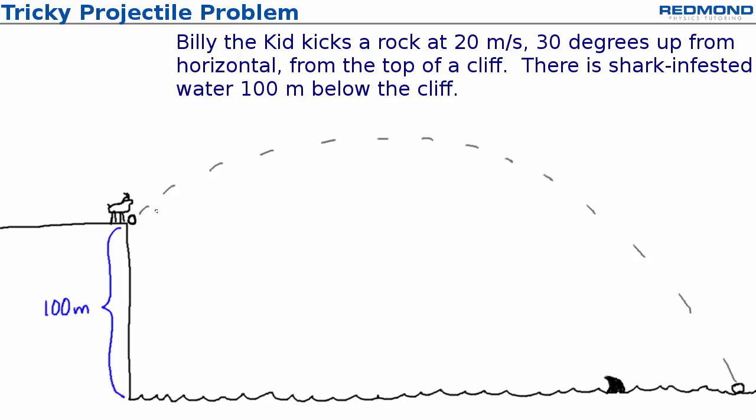Billy kicks a rock with a speed of 20 meters per second in a direction that is 30 degrees up from horizontal right from the edge of the cliff. Just after he kicks the rock, Billy asks himself two questions.